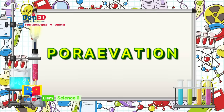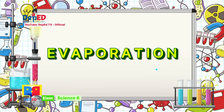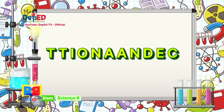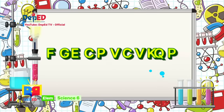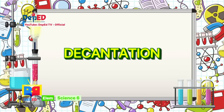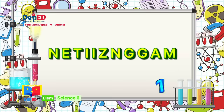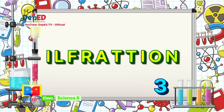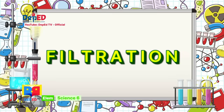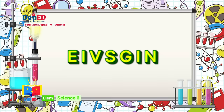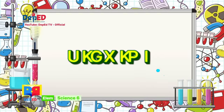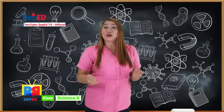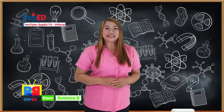Arrange the jumbled letters to form the correct word. Write your answers on your paper. Evaporation. Correct! Decantation. Great! Magnetizing! Excellent! Filtration! Very good! Sieving! Well done, my dear learners! You got it correctly! It only shows that you truly understood our previous discussions. Keep it up!